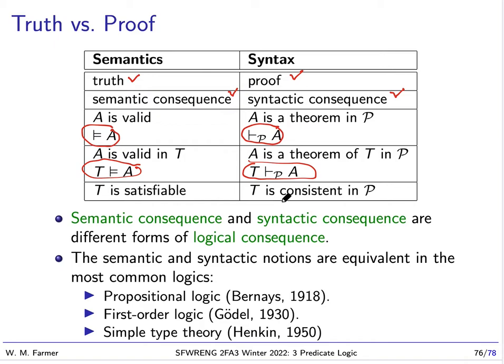And finally, we have T as satisfiable corresponds to T as consistent in P. T as satisfiable means T has a model. T as consistent in P means we can't, not everything is a theorem of T.